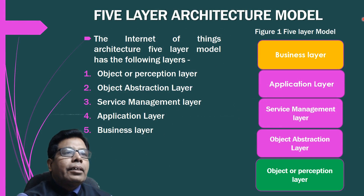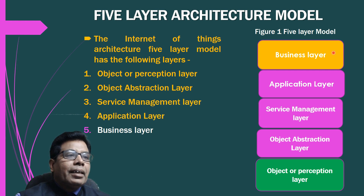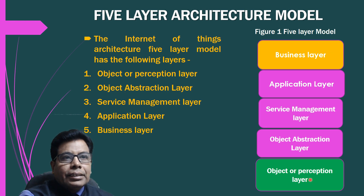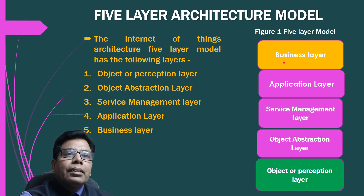The Internet of Things architecture five-layer model has the following layers: object or perception layer, object abstraction layer, service management layer, application layer, and business layer. You can see these layers in the figure.